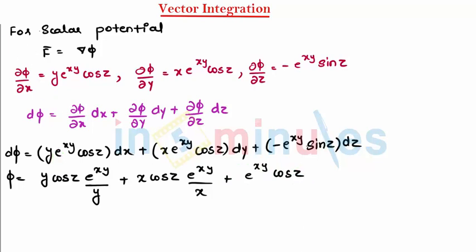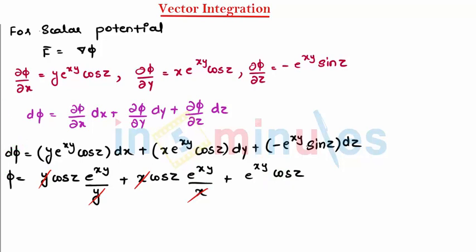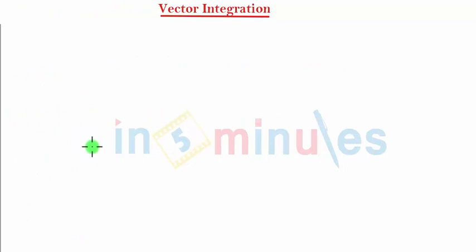From here, the repeated terms cancel each other out. This and this get cancelled, this and this get cancelled, and all three terms give me e^(xy)·cos(z). So I can see that φ = 3·e^(xy)·cos(z).